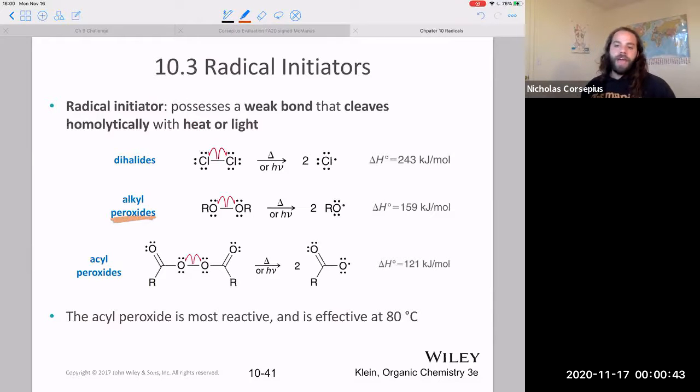Peroxides are that much more likely to homolytically cleave. They cleave very, very easily. So they're a really efficient way to generate radicals.